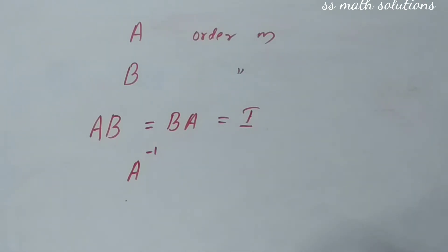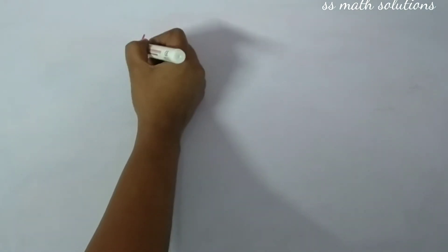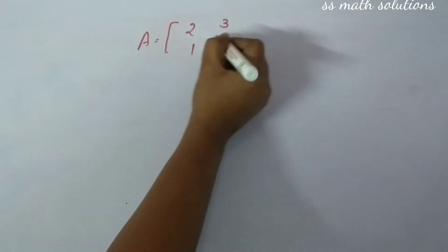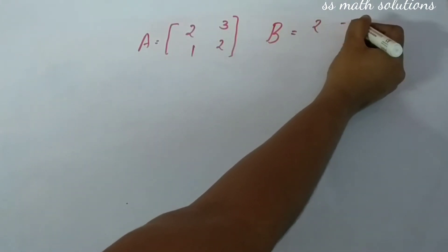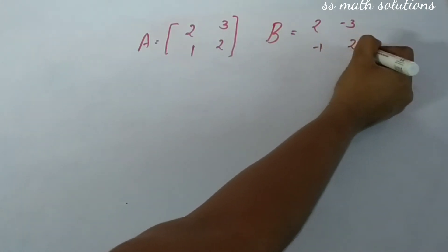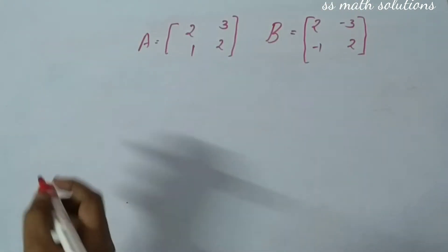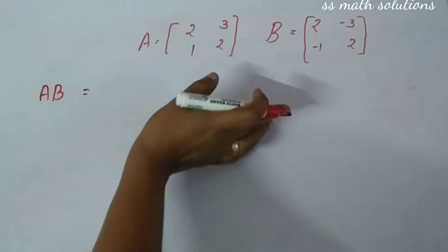Now I will show you an example. A is equal to the matrix [2, 3; 1, 2] and B is equal to [2, -3; -1, 2]. So we have two matrices. Let's find AB, the product of A into B.